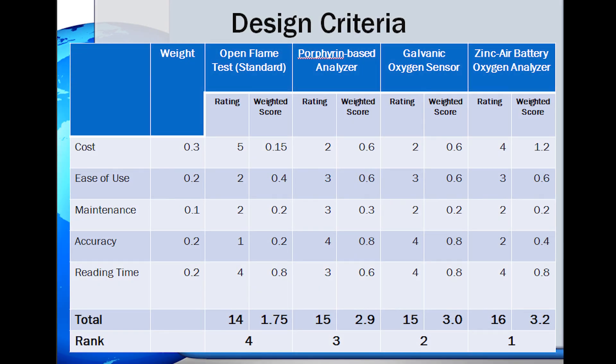Three current solutions were compared against our solution using a PU matrix. After our initial research, the team developed a list of five criteria that factor into the design of a successful product. We decided that driving down cost was the primary improving factor that we could target, followed by equal shares of accuracy, ease of use, and reading time. The last is the ease of maintenance. The results put the zinc air battery design at the top, followed by the porphyrin-based analyzer, galvanic oxygen analyzer, and lastly the open-flame test.